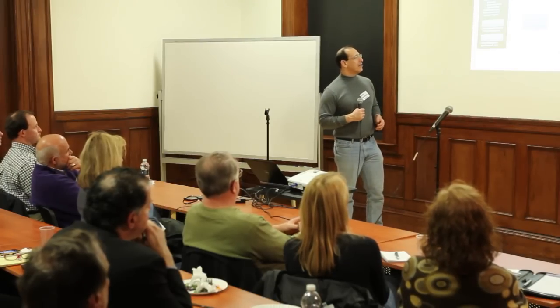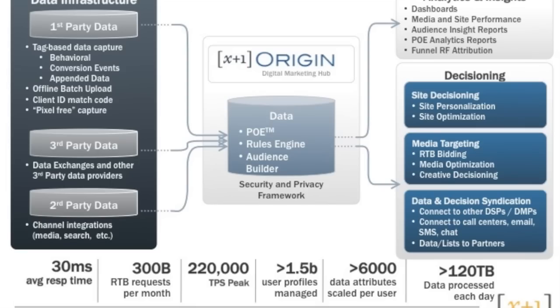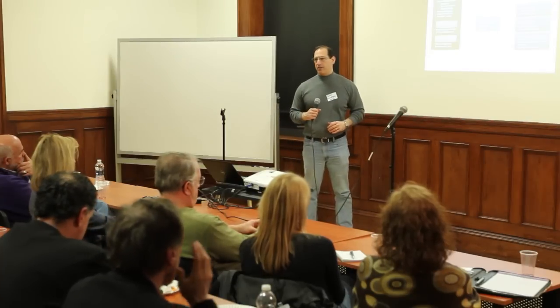The system has to operate at massive scale. In order for you as a consumer not to have a delay in that website loading or that ad being delivered, data has to be pulled in, a decision made, and pushed back out in under 30 milliseconds — that's really fast. The platform handles 300 billion ad requests a month, can process 220,000 transactions per second. There are 1.5 billion user profiles currently under management, and those user profiles have scaled to over 6,000 attributes per user simultaneously. We process about 120 terabytes of data every day. There's a massive infrastructure behind all this, really the cutting edge of high-volume computing.